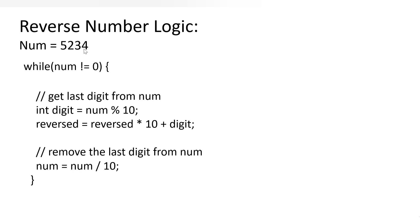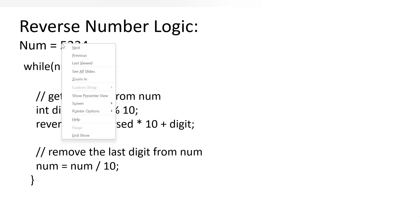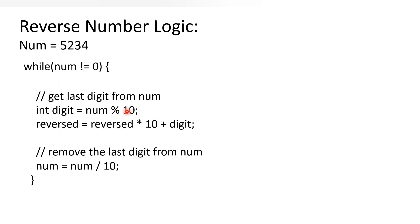If we have a number 5234, we will make use of a while loop and continue the loop until the number becomes 0, or when the number is not equal to 0. We need to reverse the number, so whatever the last digit is in the original number, we want to make it the first. We need to get the last digit, because the reversed number will start from 4, then 3, then 2, then 5.